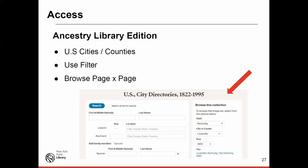Use Ancestry's filter rather than just keyword searching, since city directories may not be individually indexed name by name. Use the right sidebar filter to select state, then county, then city or town, and see what years are available. Ancestry's page-by-page scrolling is faster than NYPL Digital Collections, but NYPL Digital Collections is much more comprehensive for New York.